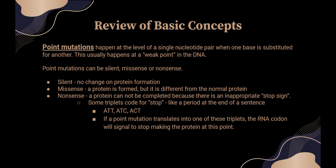However, methionine can only be formed by TAC, and if you substitute a T in the middle you have TTC and you're going to make lysine instead of methionine. Just understand that when you substitute a base pair, you may or may not get a different amino acid. A silent point mutation means the same protein is formed. A missense point mutation means a different protein is formed. And a nonsense point mutation means you can't form the protein, because there are three sequences that act like a stop sign or a period at the end of the sentence — it signals the cell to stop making the protein at that point.